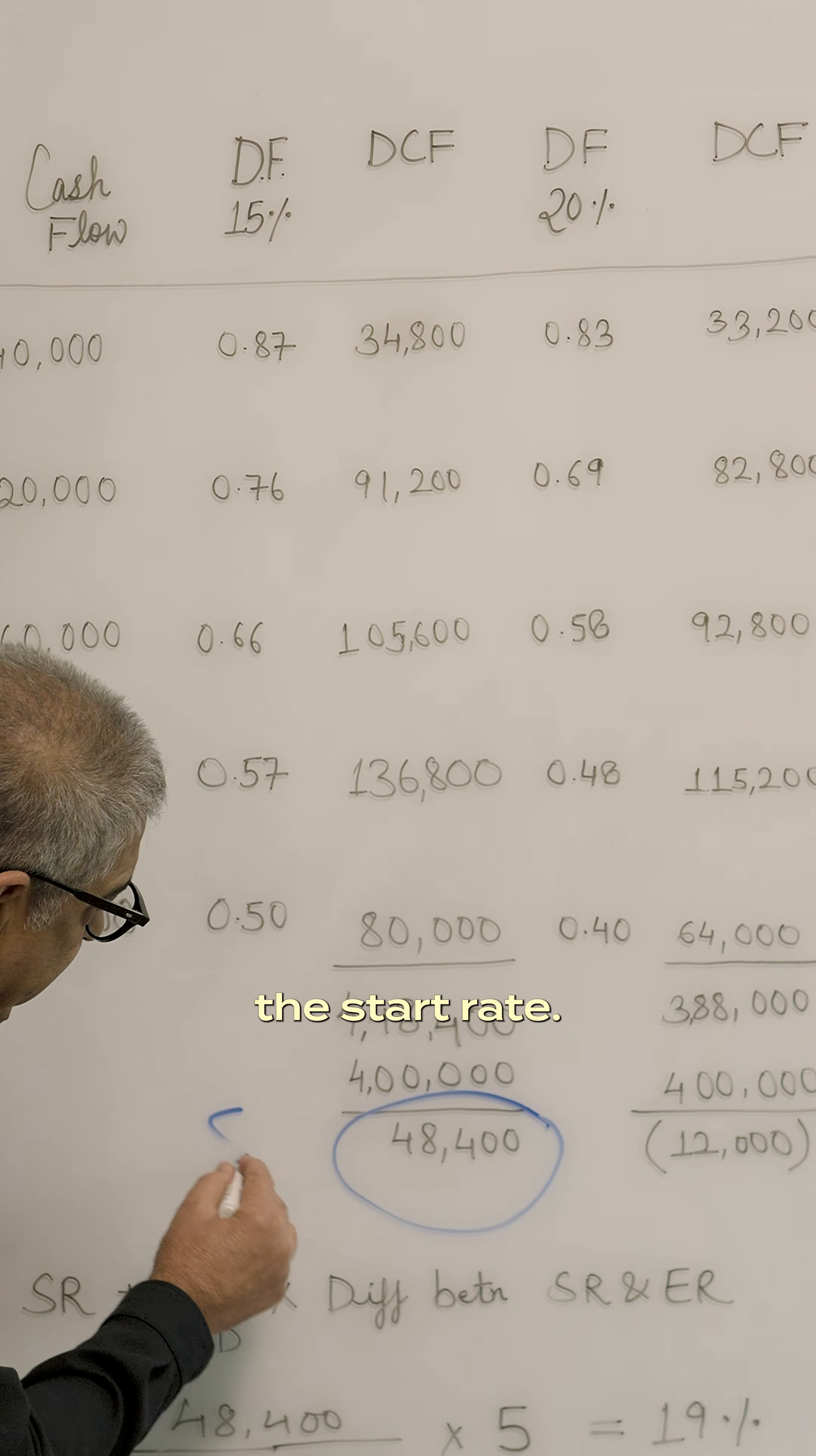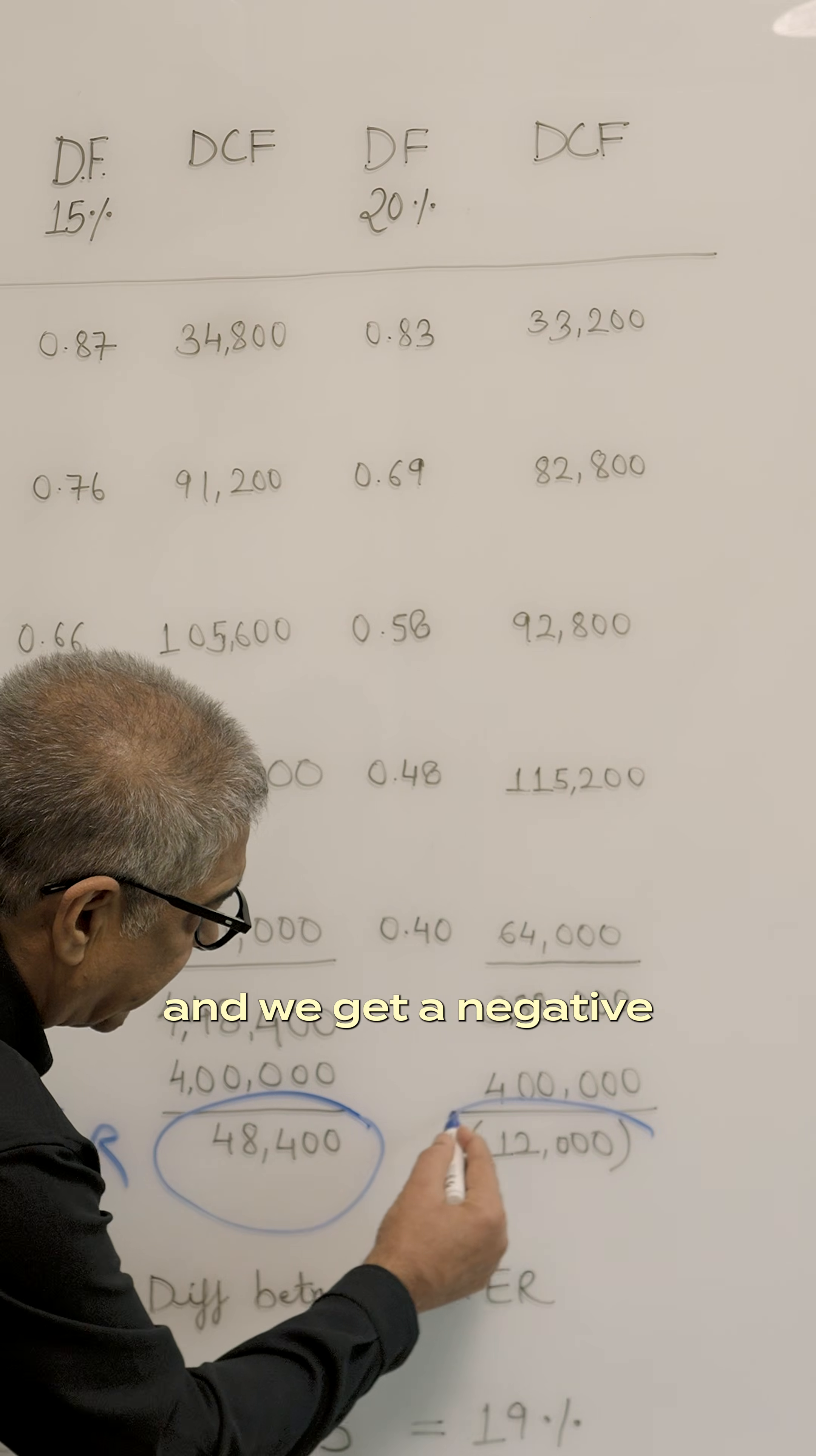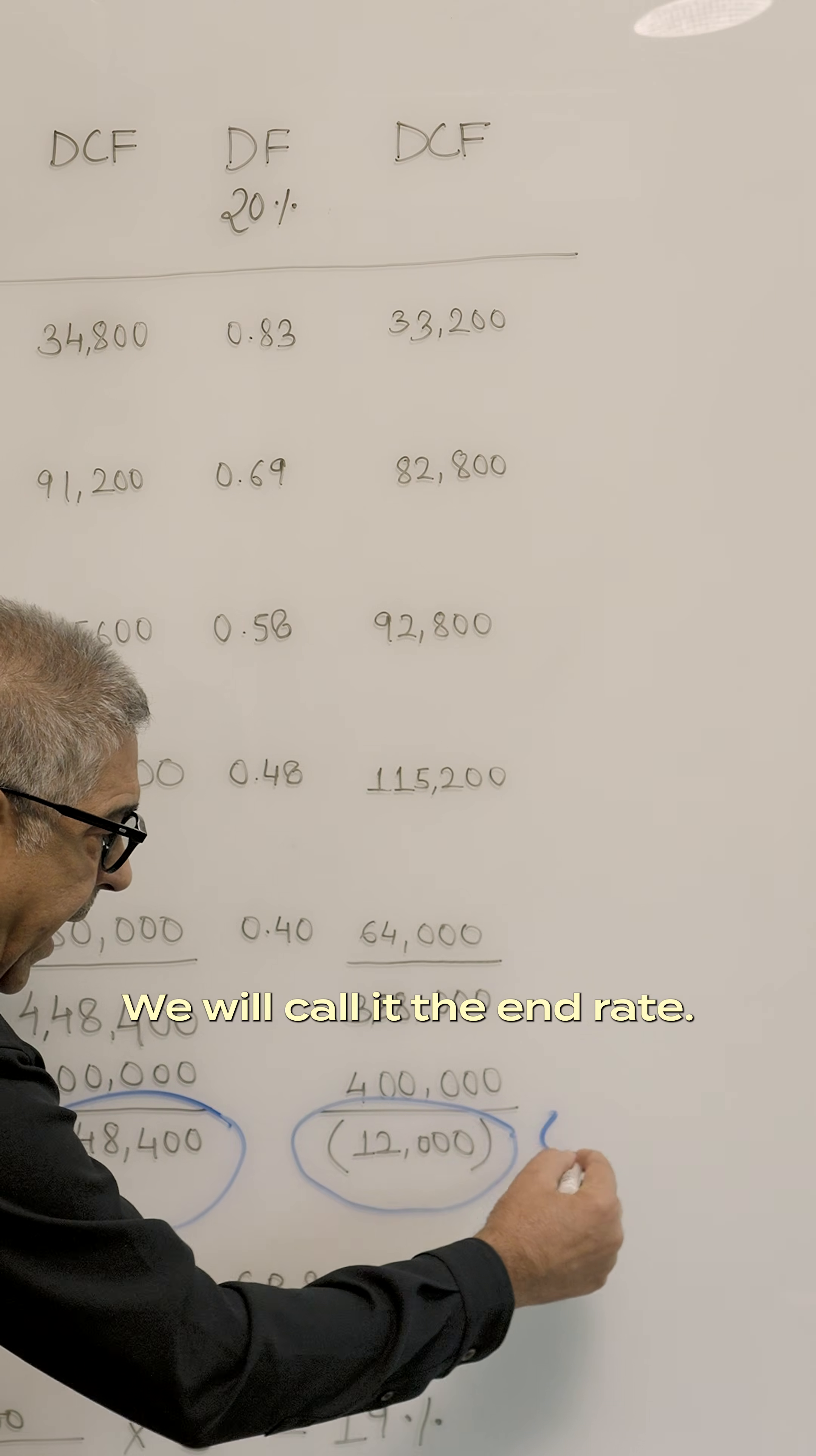We will call this the start rate. Then we apply a 20% and we get a negative cash flow, negative NPV. We will call it the end rate.